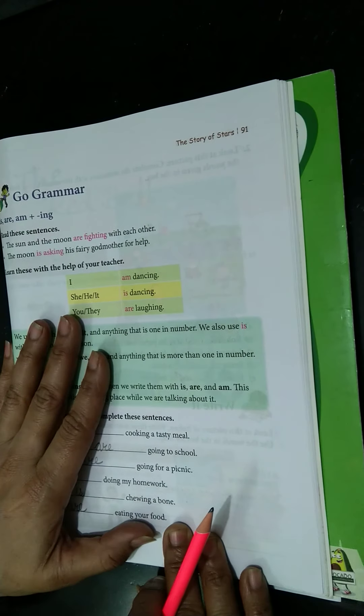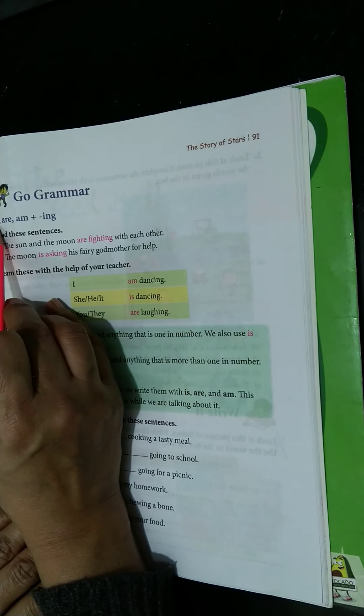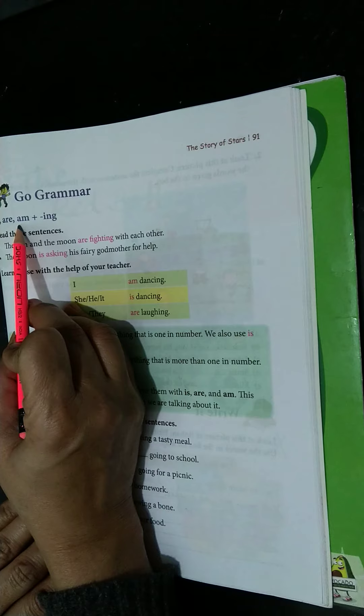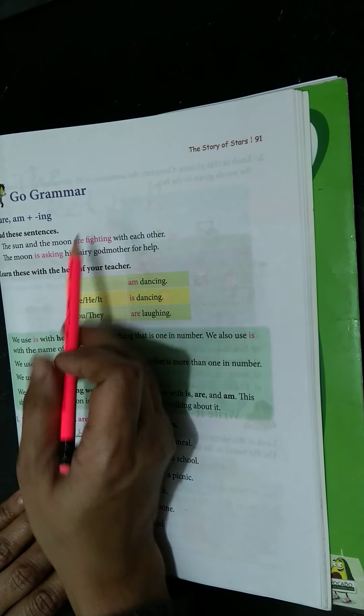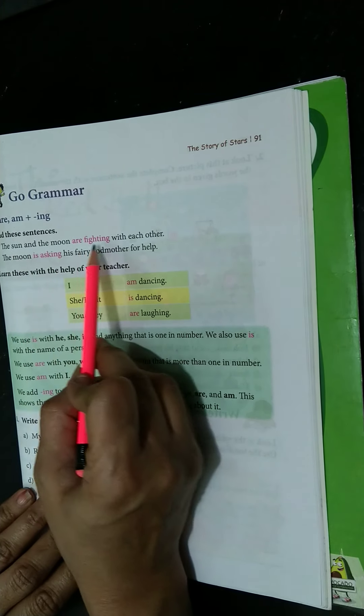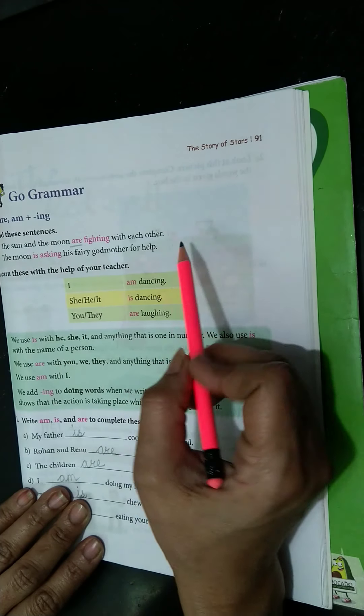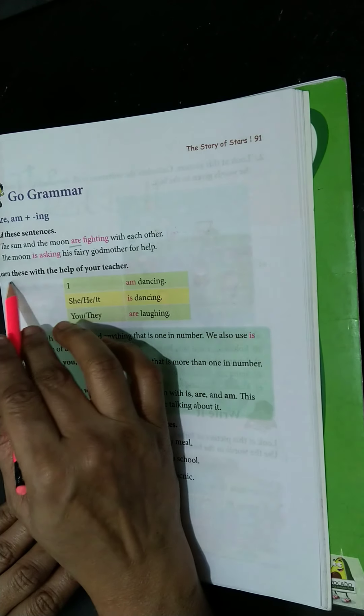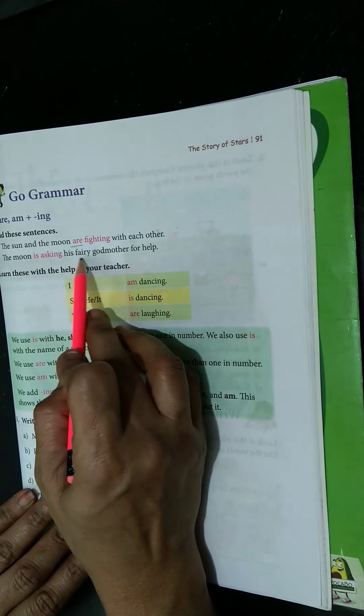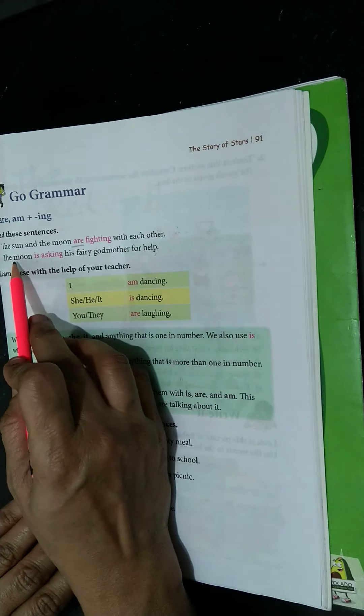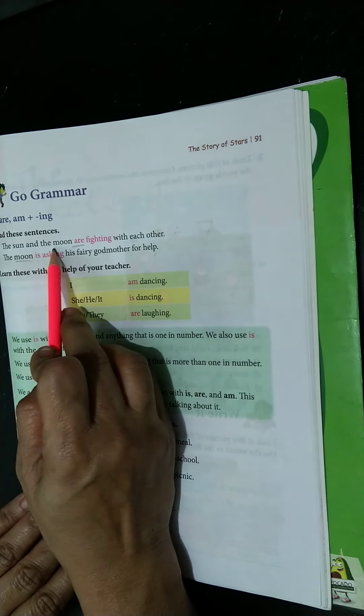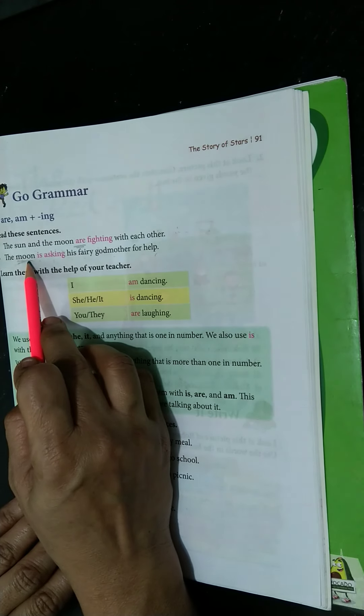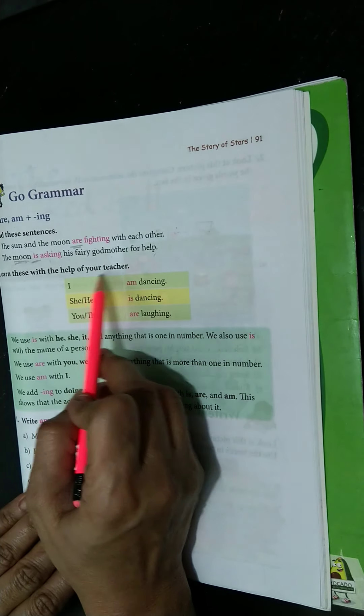Go grammar. Here we are just going to learn about I-S, A-R-E, A-M plus I-N-G. Read these sentences. The sun and the moon are fighting each other. Are, when more than one. Is for only one. The moon is asking his fairy godmother for help. Moon was alone. Moon and sun, two, more than one, so are. When the moon is one, so is. Learn these with the help of your teacher.